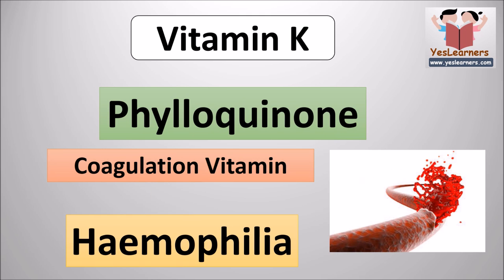The scientific name of vitamin K is phylloquinone. It is known as coagulation vitamin. Vitamin K helps with blood clotting. The deficiency of vitamin K leads to the disease hemophilia.